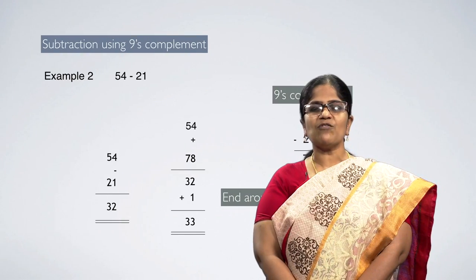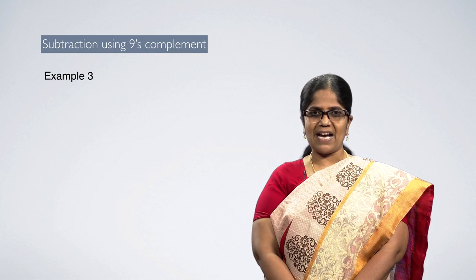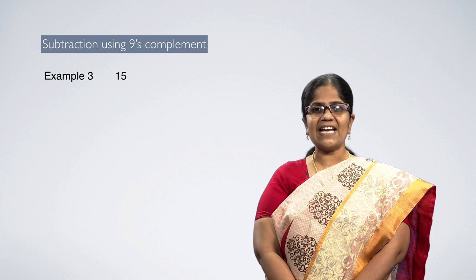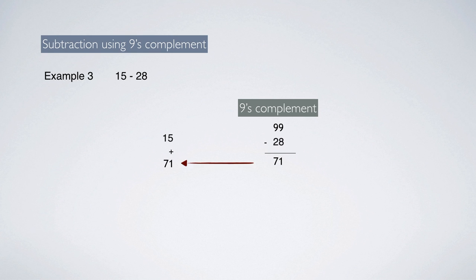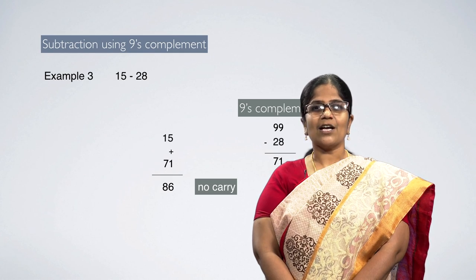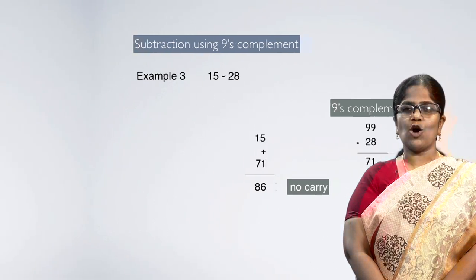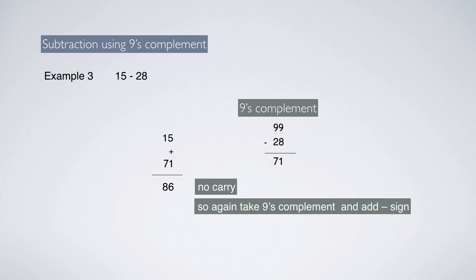The above two examples work for positive numbers. Let us see how 9's complement subtraction works for negative numbers. Example: 15 minus 28. The first number 15 is left as it is. For the second number 28, take 9's complement: 99 minus 28 equals 71. Now we have 15 and 71 — when added, the answer is 86. Notice that no carry exists. Whenever the result has no carry, take 9's complement of the result and add a negative sign: 99 minus 86 is 13, and adding a negative sign gives the final answer minus 13. In regular decimal subtraction also, 15 minus 28 is minus 13.